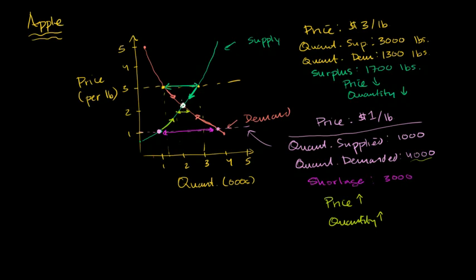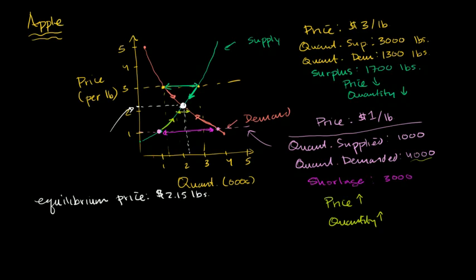You can see that it's all converging on a point right over here where the two lines intersect. That's the price at which the quantity supplied equals the quantity demanded. We call this the equilibrium price — which for this scenario looks like about $2.15. And the quantity where supply equals demand is called the equilibrium quantity.